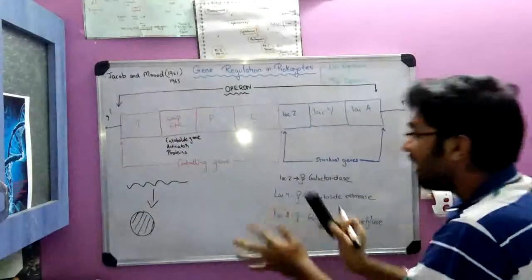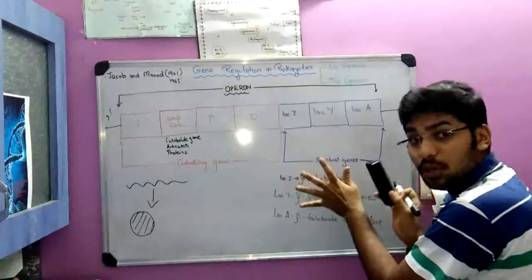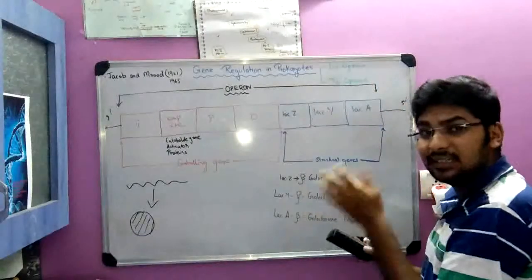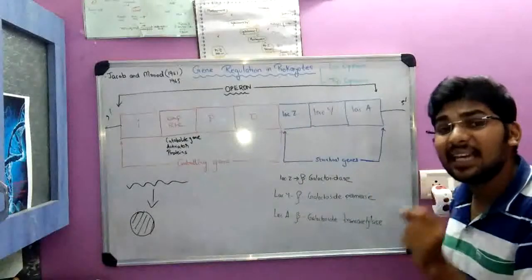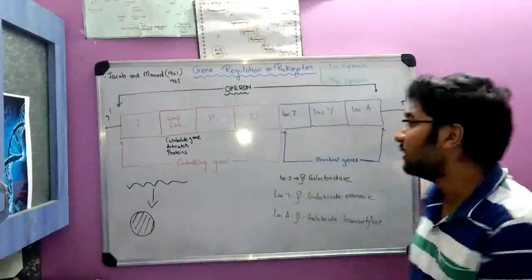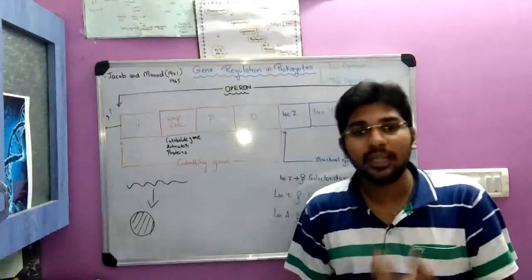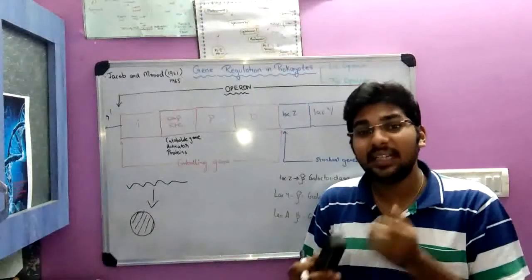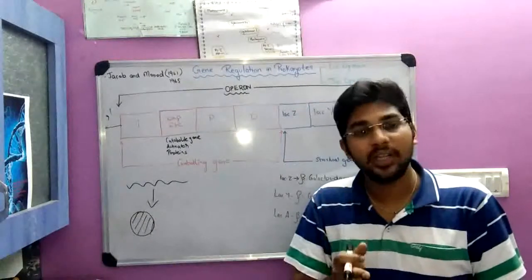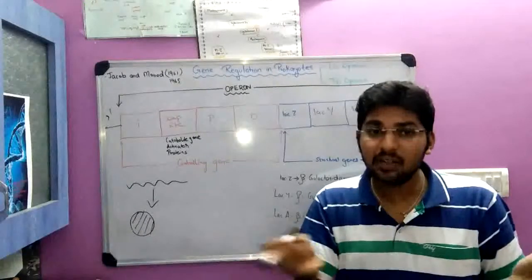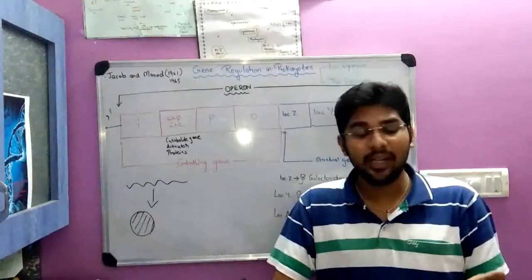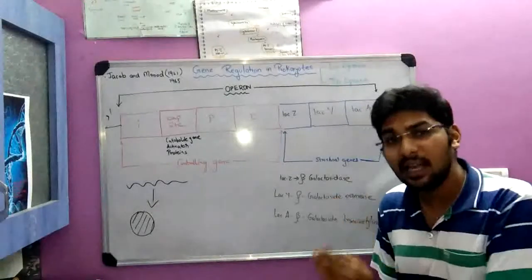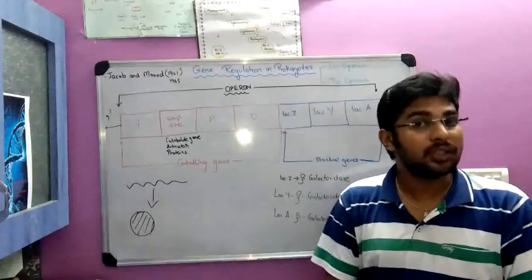The other group of the operon is the structural gene, which is of three types: Lac Z, Lac Y, and Lac A. Lac Z gives a very important enzyme called beta-galactosidase. The function of beta-galactosidase is the breaking down of lactose, which is a disaccharide, into two monosaccharide units: glucose and galactose. Hence the name beta-galactosidase.